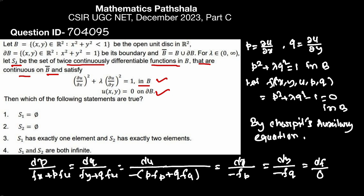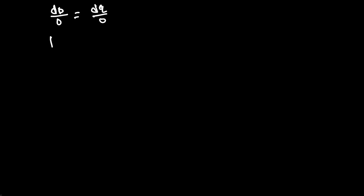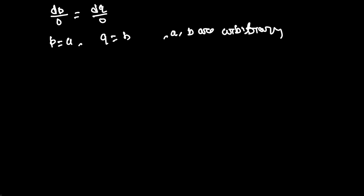From the first two fractions, since the partial derivative of F with respect to x is 0, with respect to u is 0, and with respect to y is also 0, we get dp = 0 and dq = 0. This gives p = a and q = b, where a and b are arbitrary constants.